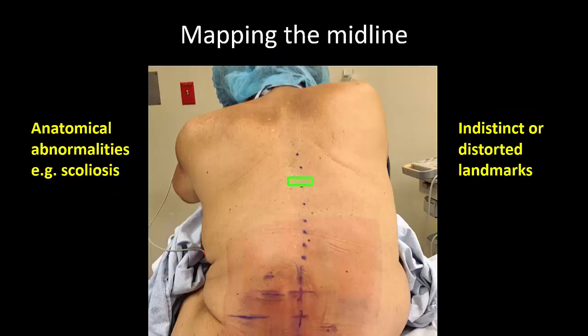What the transverse view is useful for is to map the midline, particularly in patients with scoliosis, or for example the ICU patient with impalpable landmarks due to dependent edema who is also lying in a soft saggy bed that leads to curvature of the spine.